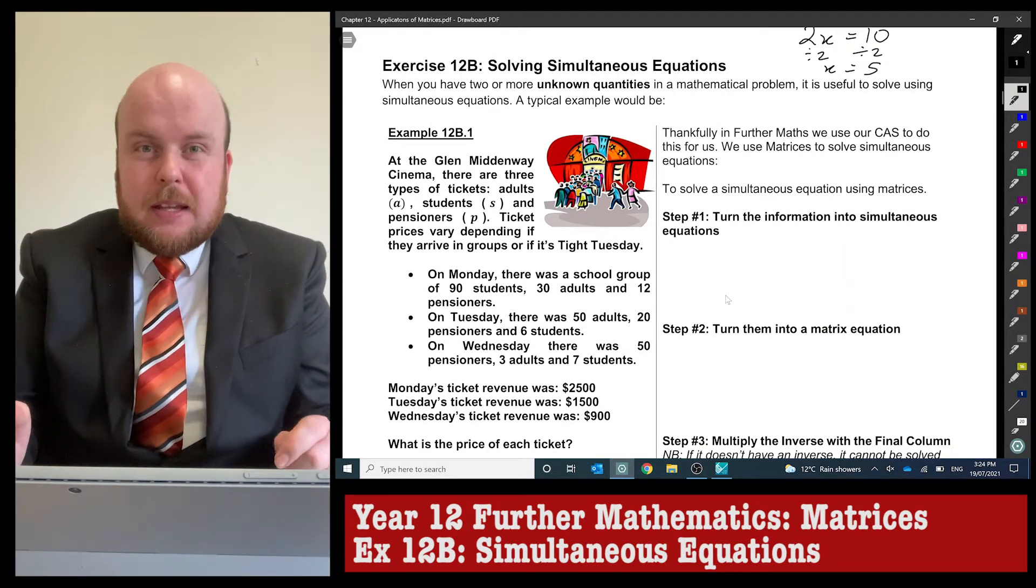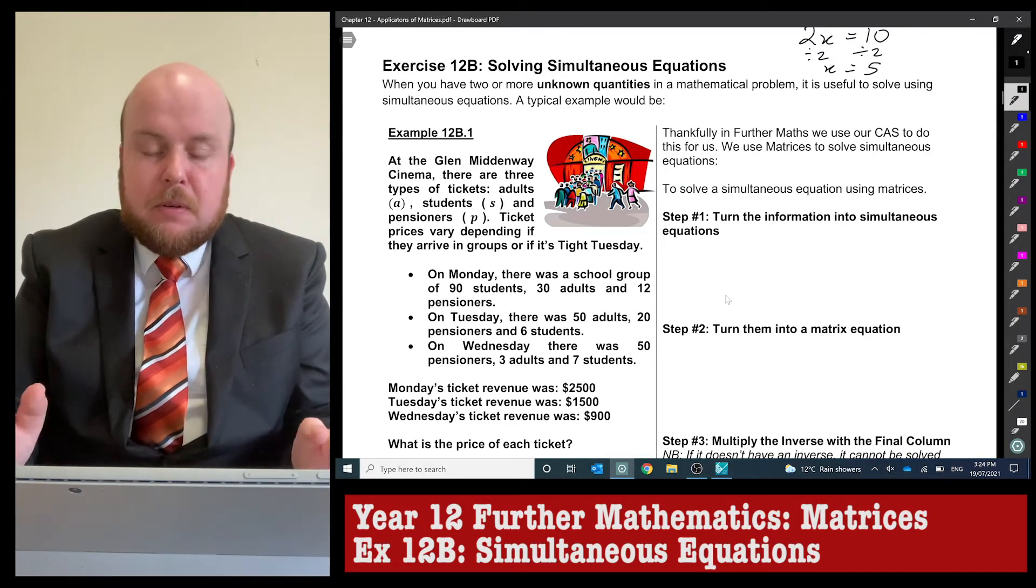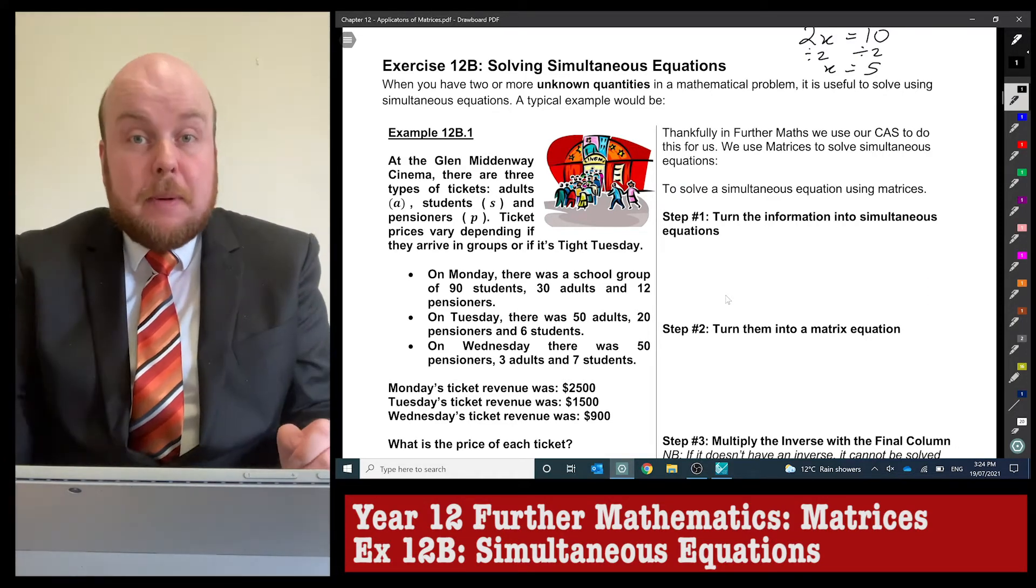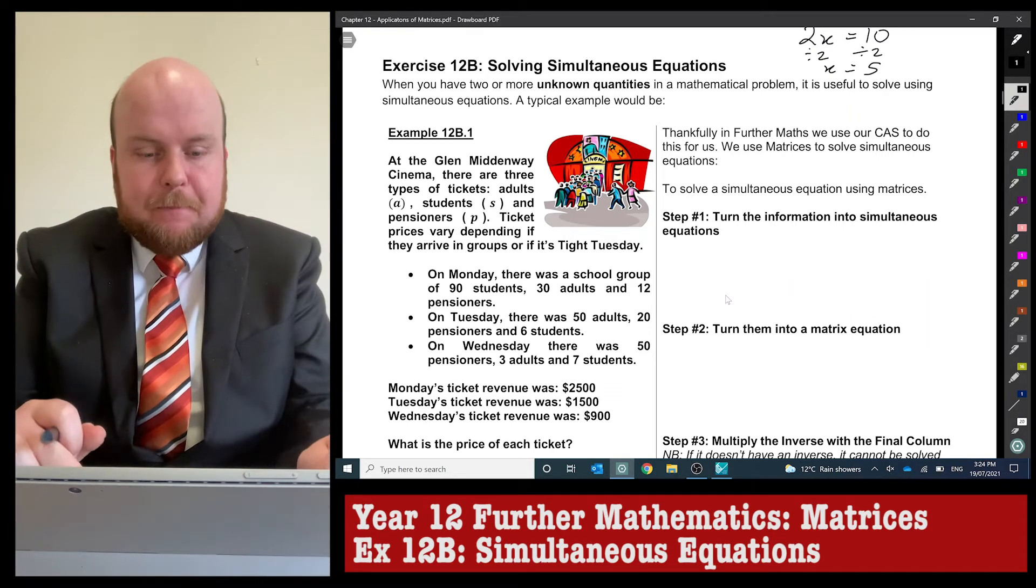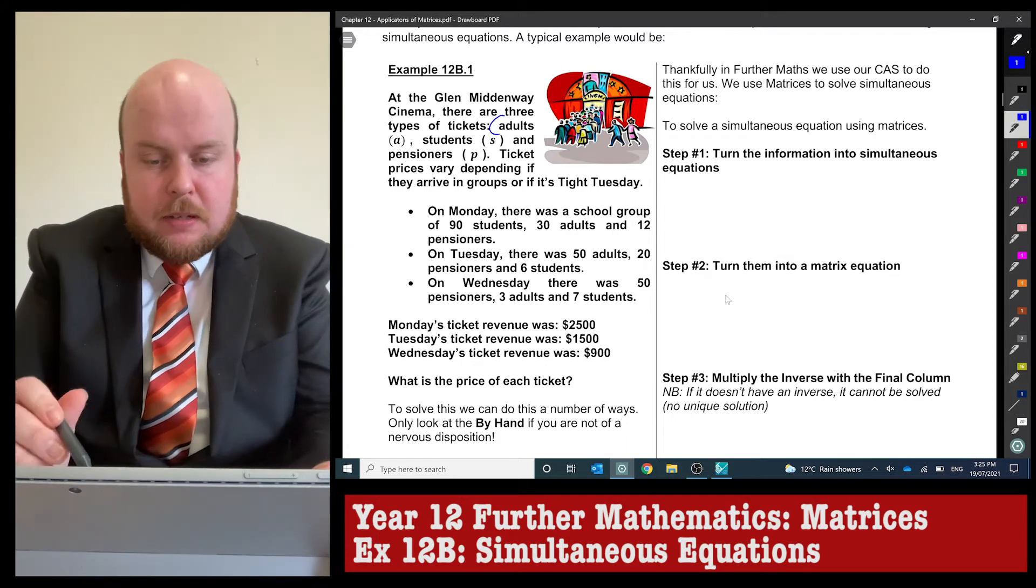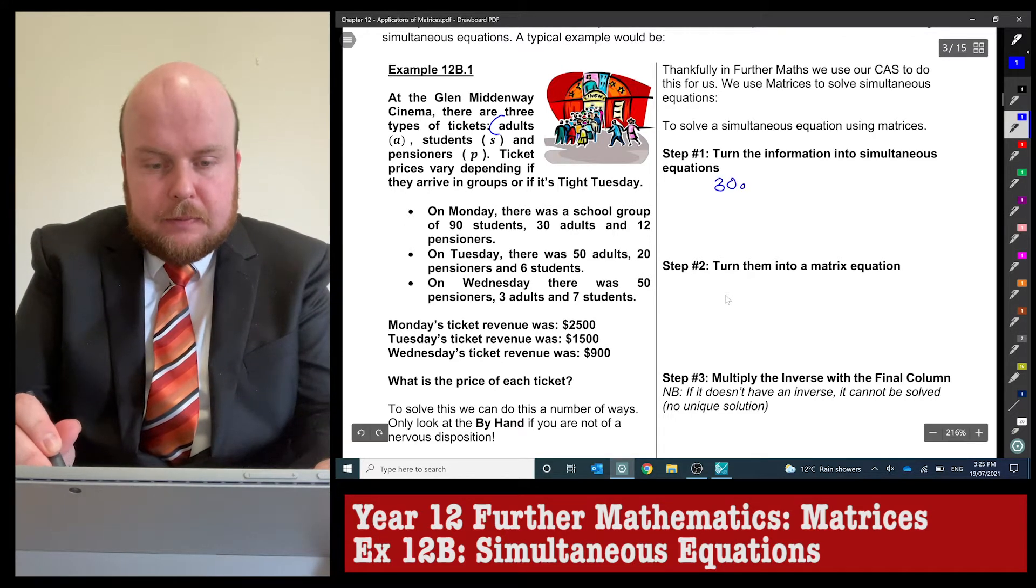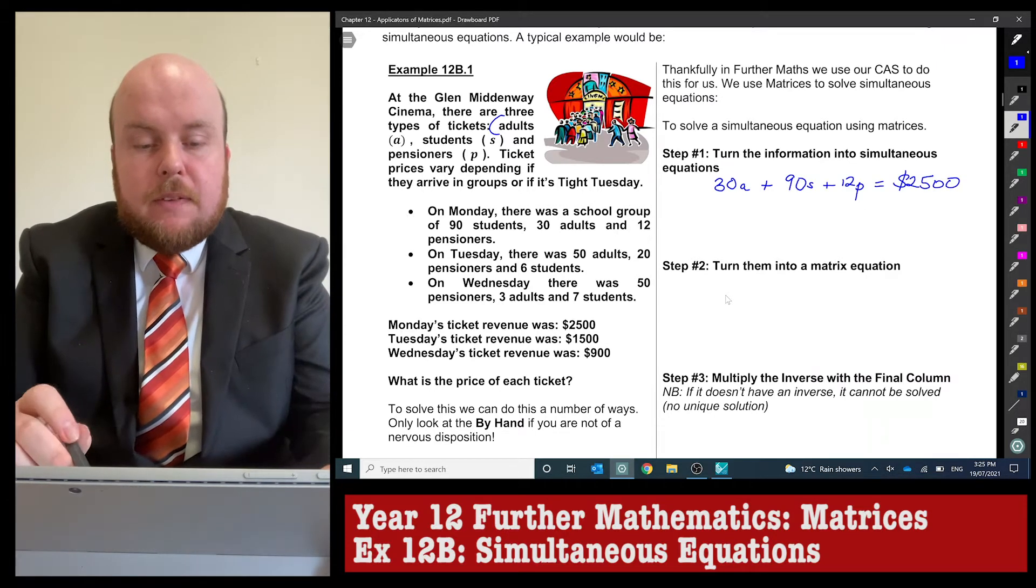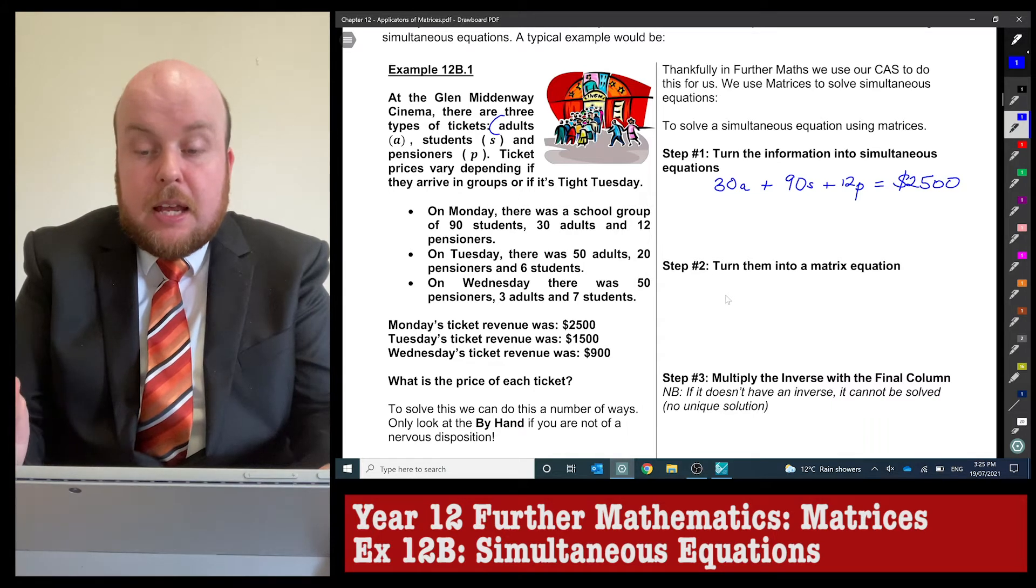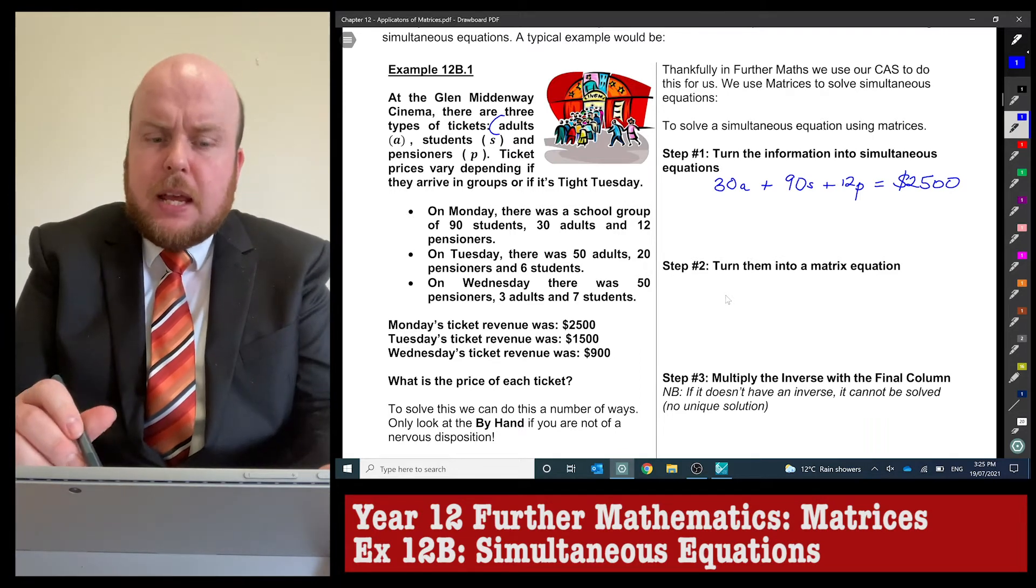There's a variety that depends on whether groups or Tight Tuesday. I'm assuming we're trying to find an average price. We've been told we've got adults, students, and pensioners, so I'm going to write my first equation. For Monday there were 30 adults, 90 students, and 12 pensioners, and that got us a revenue of $2,500. Let's do the same for Tuesday and Wednesday.